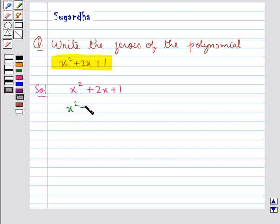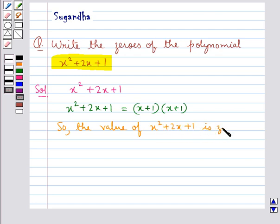Now we have that x squared plus 2x plus 1 is equal to x plus 1 into x plus 1. So the value of x squared plus 2x plus 1 is zero when x plus 1 equal to 0 or x plus 1 equal to 0.